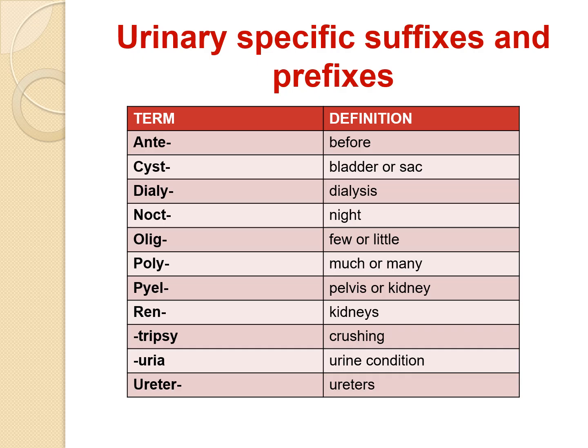REN, reno, or REN indicates kidneys. 'Trypsy' indicates crushing, as in lithotripsy. 'Urea' indicates a condition related to urine, and 'ureter' indicates ureters.